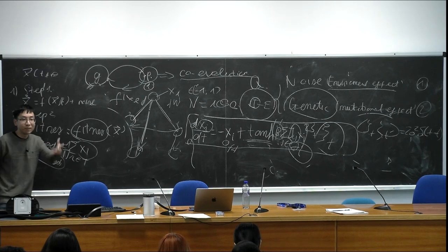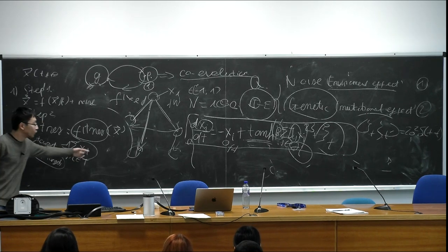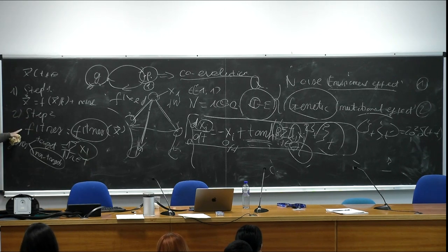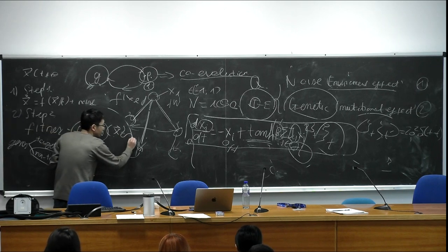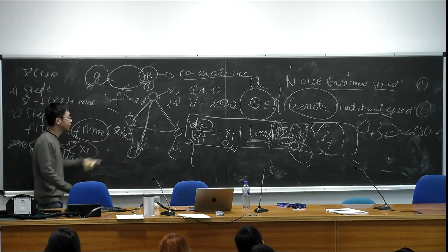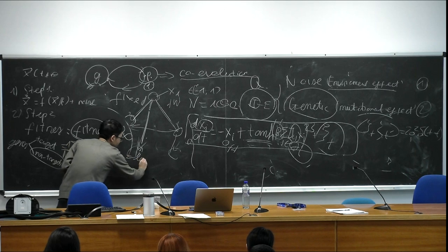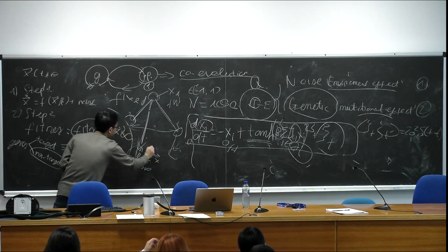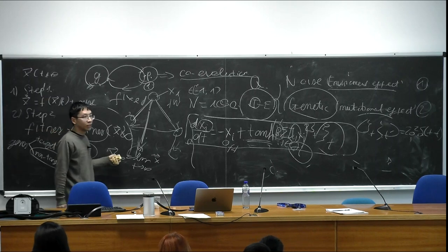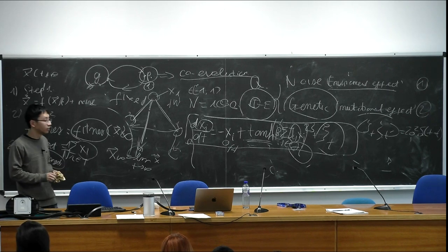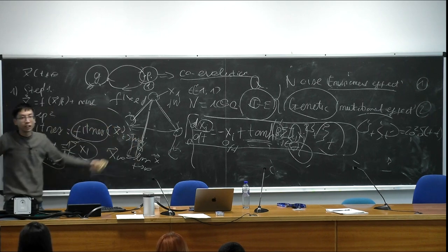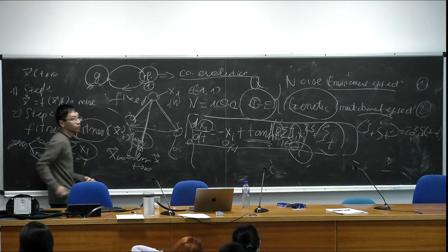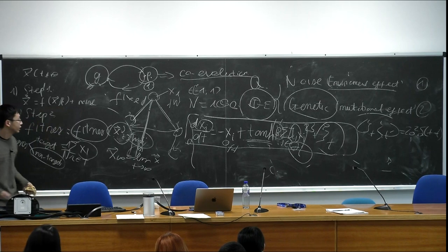To compute the fitness, mathematically you want to consider x at t approaching infinity — the steady-state limit. In simulation, you run the dynamics long enough, assume the system has settled into the stationary state, then start measuring the phenotype and compute the fitness. The fitness is evaluated at the steady state after some transient time.